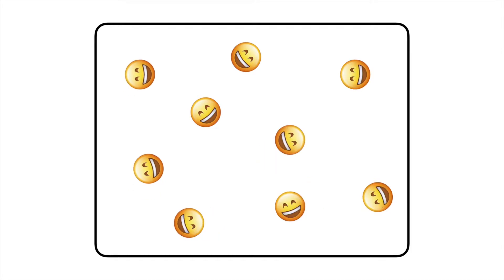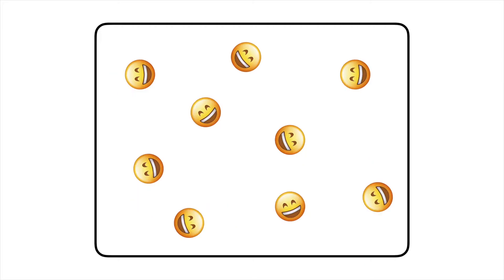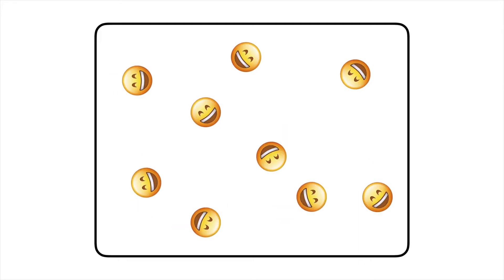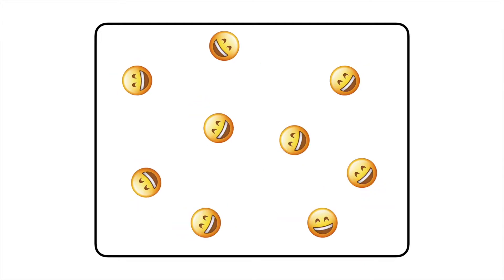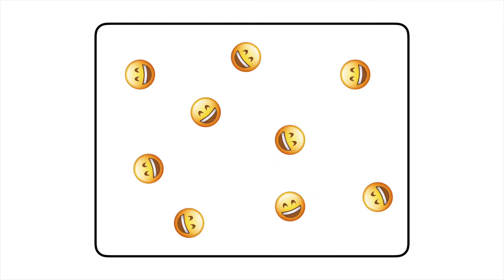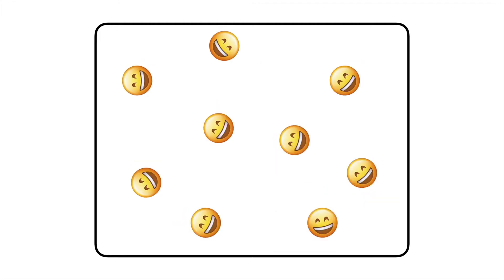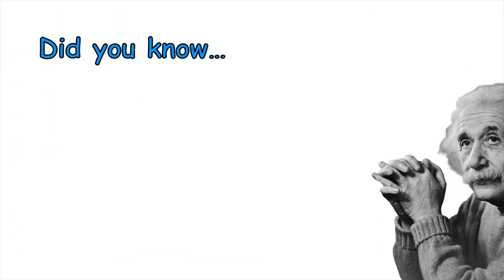After molecules are evenly spread out, they still move around in all different directions; however, they remain evenly spread out. Diffusion is due to Brownian motion — molecules constantly move around in random motion, but this requires no energy. Therefore, diffusion is a passive transport.